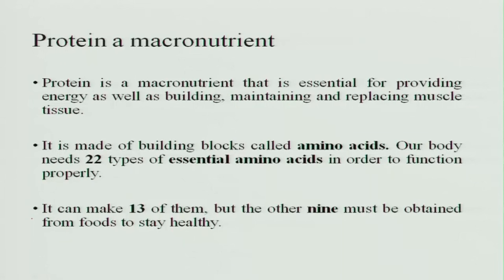Protein is called a macronutrient because it is essential for providing energy and is also important for body building, maintenance, and repair of worn-out tissues. It is made up of building blocks called amino acids. Our body has 22 types of amino acids in order to function properly; there are hundreds of amino acids, out of which 22 are essential for keeping the body fit.